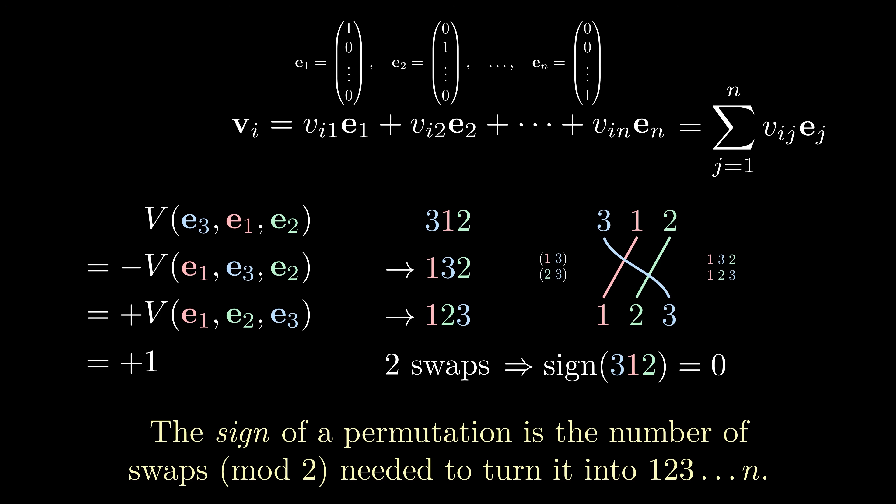Now, if you're thinking carefully, you might wonder why the sign is well defined. That is, what if I can find a way to change 3, 1, 2 into 1, 2, 3 using an odd number of swaps? Well, that's impossible, and to see why, we'll have to take a closer look at our braid diagrams.